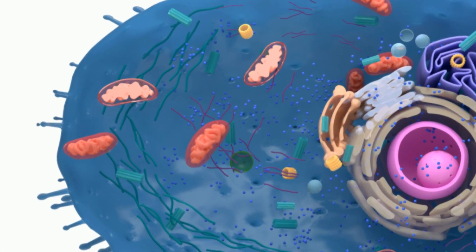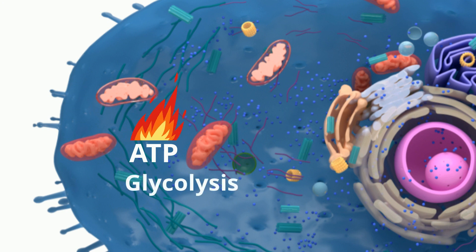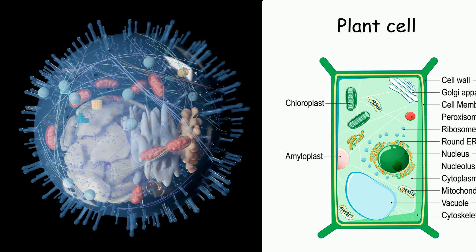The cytoplasm is also the site of ATP production through the process of glycolysis. Glucose is broken into two subunits called pyruvate, which creates two units of ATP per molecule of glucose. This happens in the cytoplasm in both animal and plant cells.